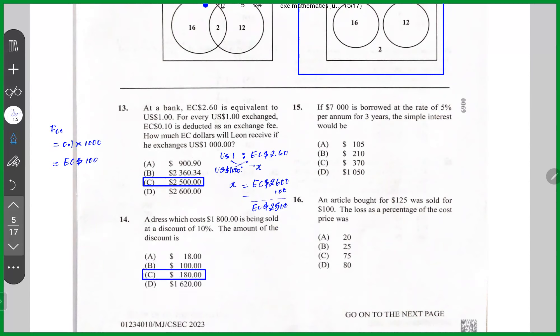Question number 15 says, if $7,000 is borrowed at a rate of 5% per annum for three years. The simple interest would be, well, I is equal to PRT over 100. The principal is 7,000. The rate is 5%. The time is 3 years. Divide by 100. Seventy times five, three fifty, times three. The interest is $1,050. So the answer here is B.